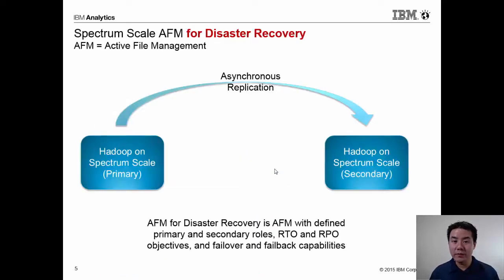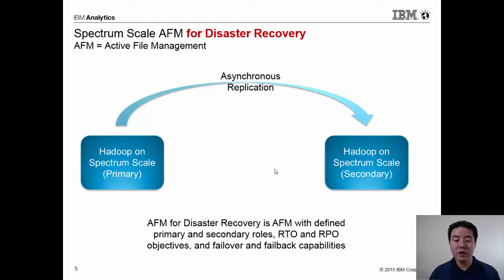While AFM technology is not new, the use of AFM for disaster recovery is fairly new. Customers were already using AFM for replication and data resiliency. In version 4.1.1, we added the notion of a primary and secondary role, the ability to define RTO and RPO objectives, and formal failover and failback capabilities.